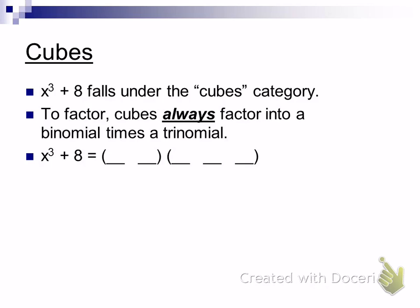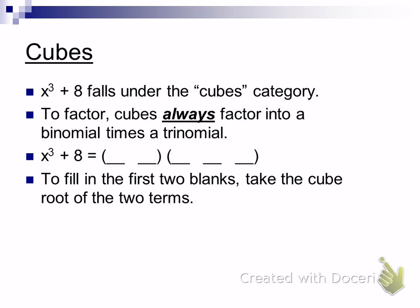X and 2 — yes. It's the cube root of the first of those two things. So to fill in the blanks, you take the cube root of the two terms. The first blank would be x, and the second blank would be 2. The cube root of x cubed is x, and the cube root of 8 is 2. Does anybody remember what goes in the next three blanks? Somebody said x squared — that just makes sense, because I know I've got to have an x cubed term. So x squared goes in the next blank.